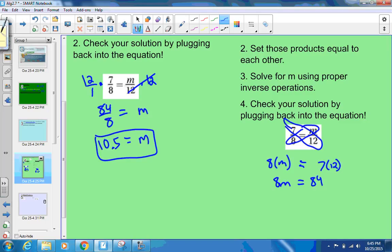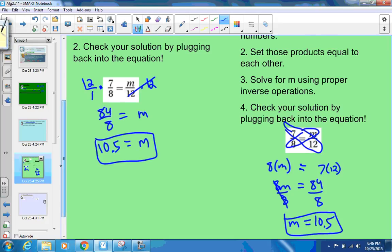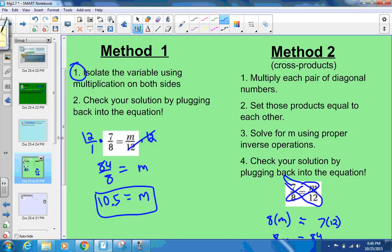Step 3 says solve for m using proper inverse operations. In this case, you just have one thing to solve. You divide both sides by 8. That's where a lot of people forget that you actually have to do one more step to solve for m after you do the cross products. So divide both sides by 8, and you get 10.5. So m equals 10.5, just like we got before. Then check your solution by plugging it back into the proportion. The cross products property is the one I'd like you to use most often because it will always work.